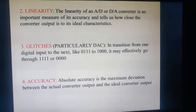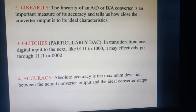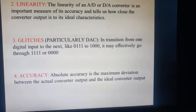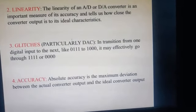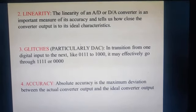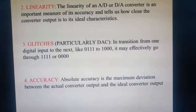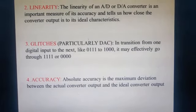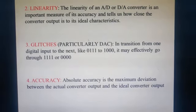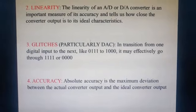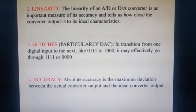The third specification is glitches. Glitches will be particularly present only in case of a digital to analog converter. This is a transition from one digital input to the next. That is, if the corresponding bits of a digital to analog converter is 0b0111, which is nothing but equivalent to 7, and it needs to change to the next value, that is 8 — whose equivalent is 1b000. Whenever it is changing its bit position, it will take some time in order to change these positions, and that is called as glitches.